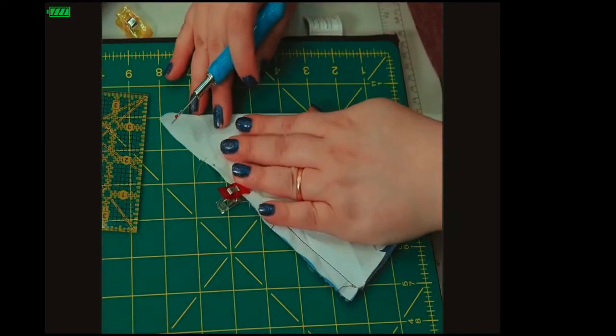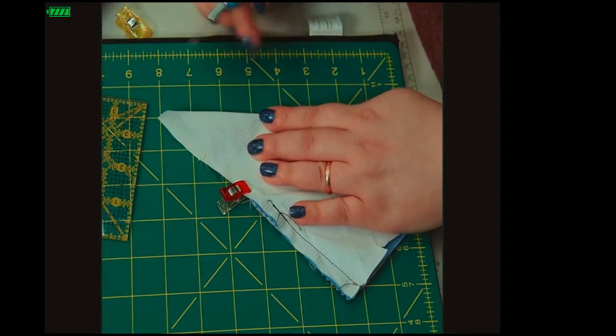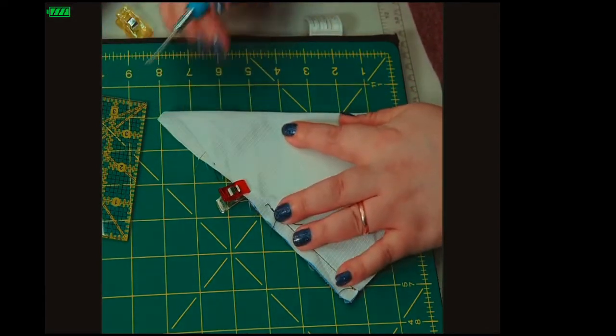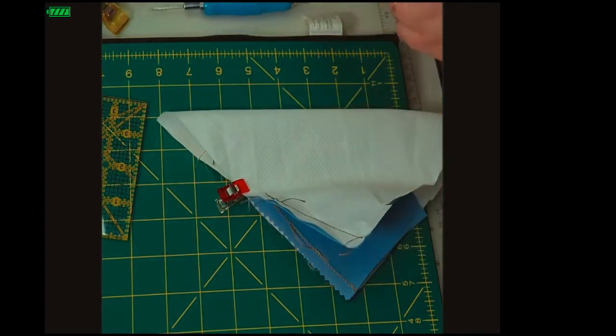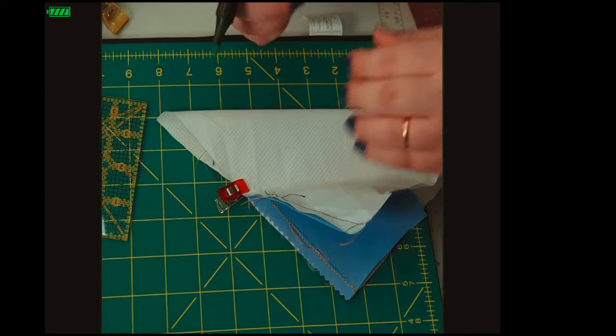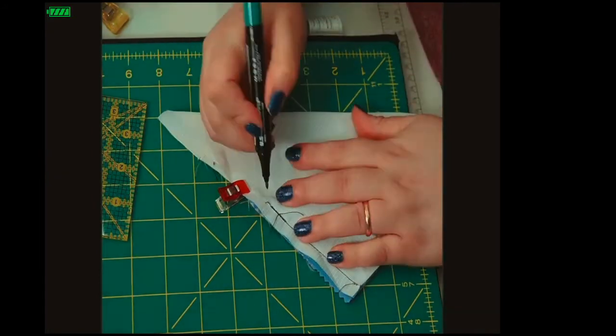What I do next is I take a gridded mat like this and I line up this angle to a line so I know that everything's flush.